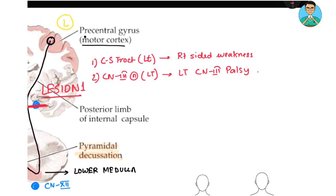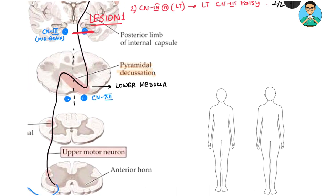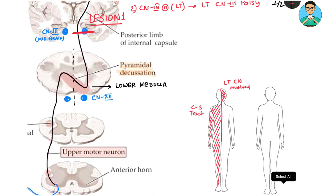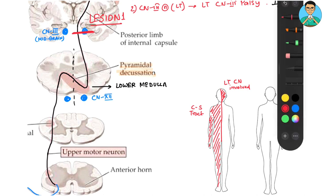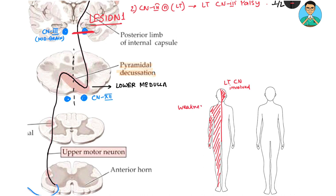Cranial nerve 3 on the left side, being damaged, causes a left-sided CN3 palsy, because cranial nerves do not cross. So with the lesion on the left, the right-sided weakness is contralateral and the CN3 palsy is ipsilateral. The cranial nerve involvement and the hemiplegia are on two opposite sides of the body. This is known as crossed hemiplegia.